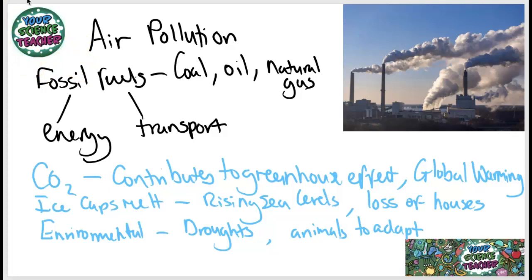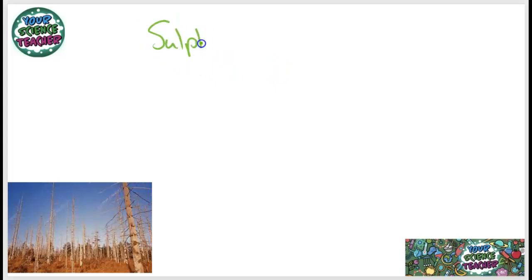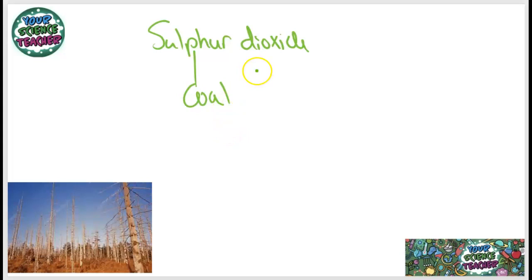Global warming is going to increasingly put pressure on governments to look at different resources other than fossil fuels for energy and transport. Another gas emitted when we burn fossil fuels is sulfur dioxide. It's a key impurity in coal — coal contains a lot of sulfur, and when we burn it, it mixes with oxygen in the atmosphere, creating sulfur dioxide. Sulfur dioxide, when it reacts with the water in clouds, creates acid rain.